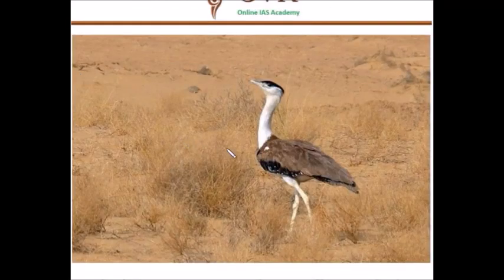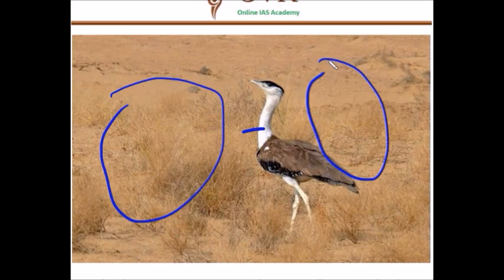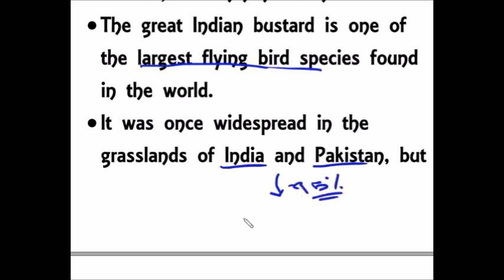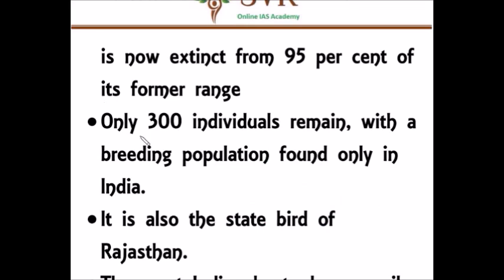In this image, you can see the Great Indian Bustard. It usually lives in the arid and semi-arid regions of northwest India, in and around the Thar Desert. The Great Indian Bustard is one of the largest flying bird species in the world. Earlier it was widespread in India and Pakistan, but now over 95% of its range has been lost, and only around 300 individuals remain in the northwestern part of India. The Great Indian Bustard is the state bird of Rajasthan.